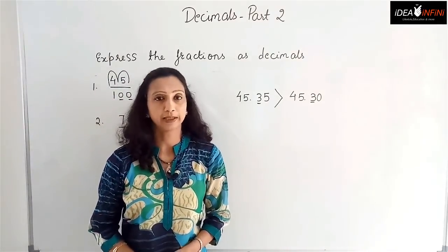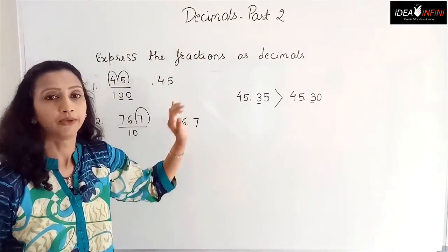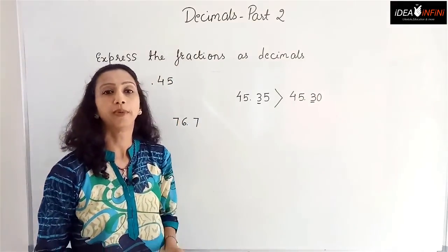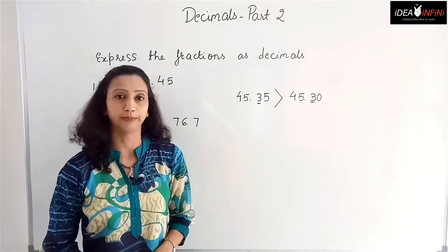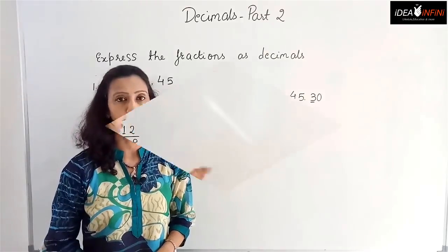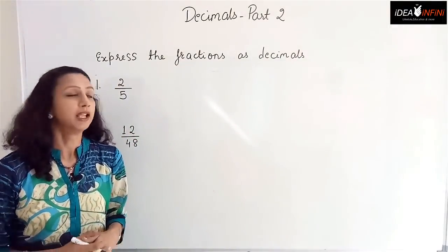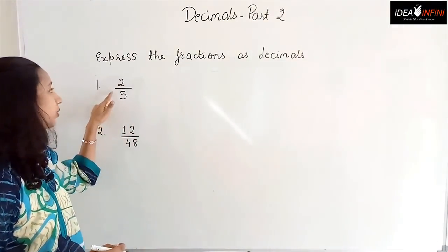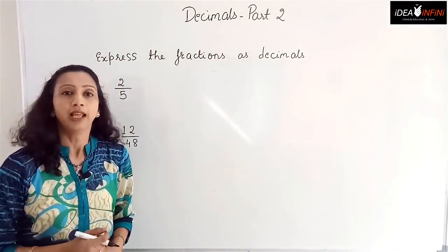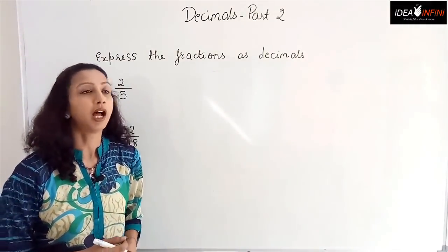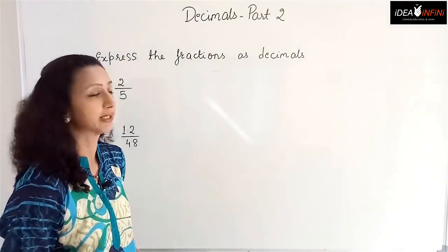This is how we compare two decimals. Now we will work on fractions with denominators other than 10 or a multiple of 10. We are given two numbers: 2 by 5 and 12 by 48. We will learn how to convert these fractions into decimals.